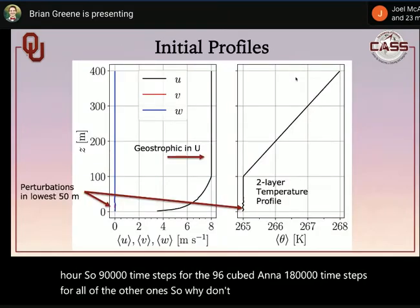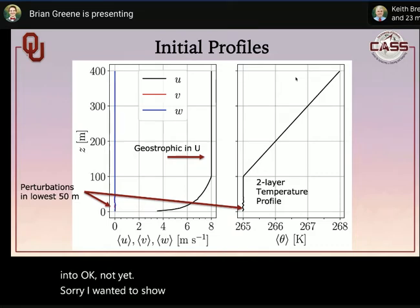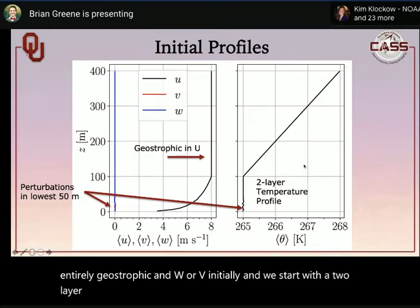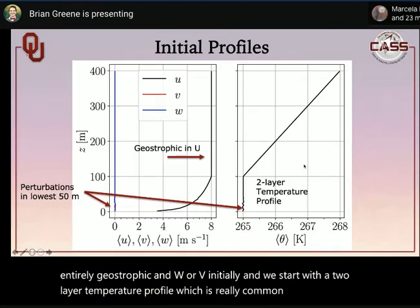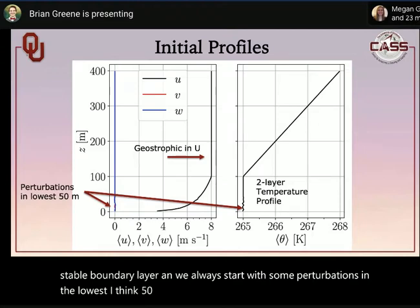The initial profiles are entirely geostrophic in u, with no w or v initially, starting with a two-layer temperature profile common for stable boundary layer LES. Small perturbations are introduced in the lowest ~50 meters to kick off turbulent mixing at the start of the simulation.